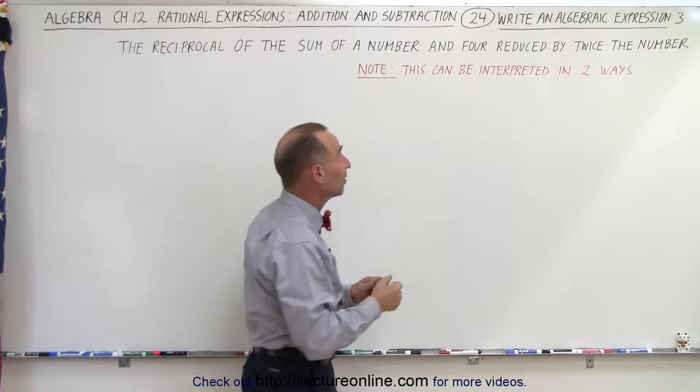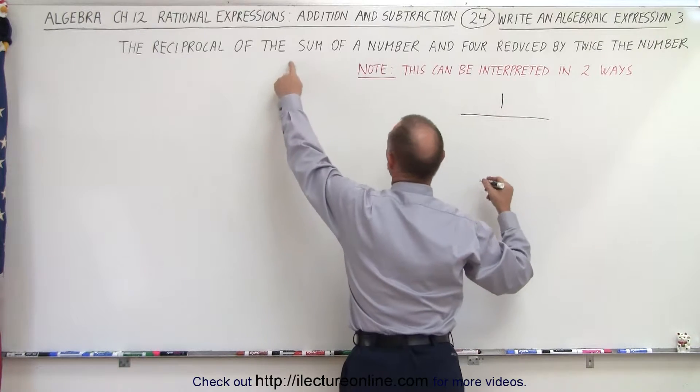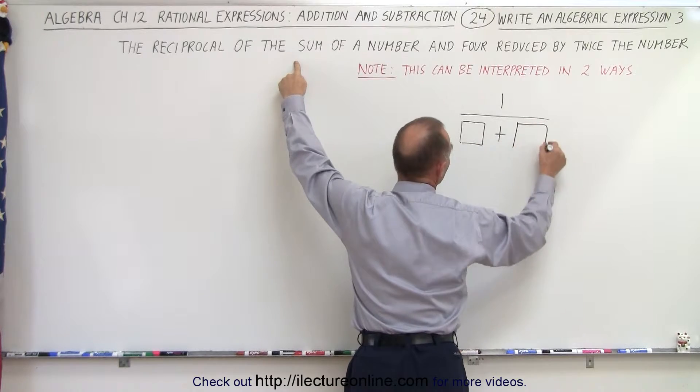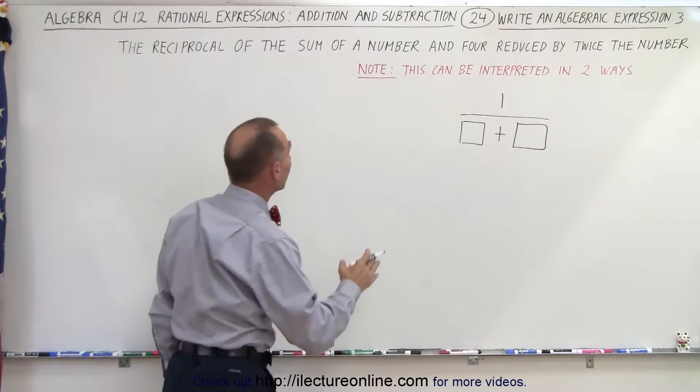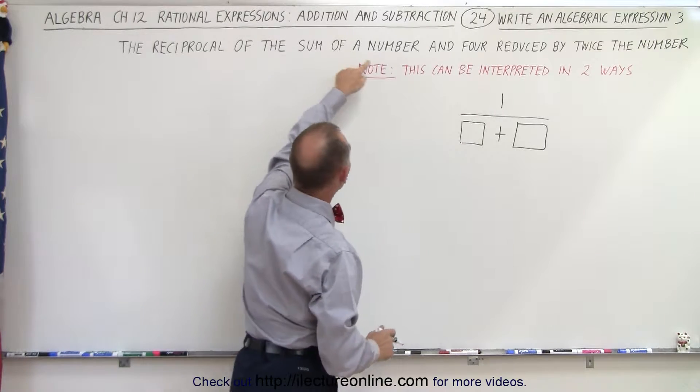In a way we can think of it as this: the reciprocal which means one over the sum of two things. If we interpret it that way it will look like this. The reciprocal of the sum of a number...